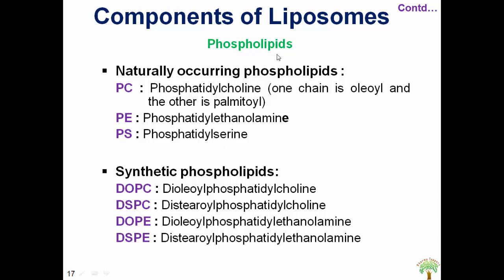Examples of phospholipids are displayed on the slide. Natural zwitterionic phospholipids include phosphatidylcholine, phosphatidylethanolamine, and phosphatidylserine. Synthetic phospholipids include DOPC, DSPC, DOPE, and DSPE, which are modified for various purposes — for example, pH-sensitive liposomes.